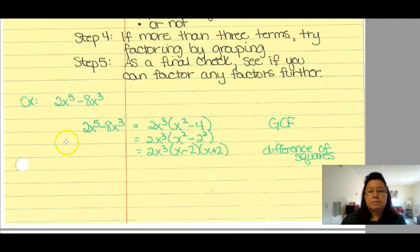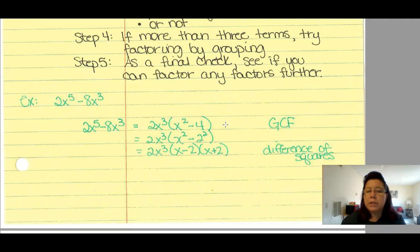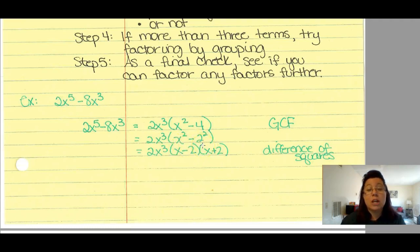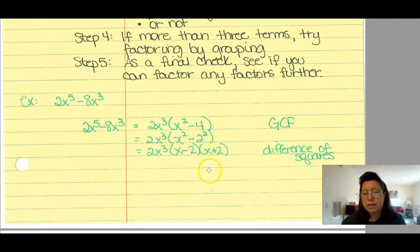Let's look at an example: 2x⁵ − 8x³. It has a GCF of 2x³. Factoring that out leaves (x² − 4). Since the remaining polynomial is a binomial with both terms squared, it's the difference of squares. I can factor x² − 4 as (x − 2)(x + 2). So the complete factoring of 2x⁵ − 8x³ is 2x³(x − 2)(x + 2).